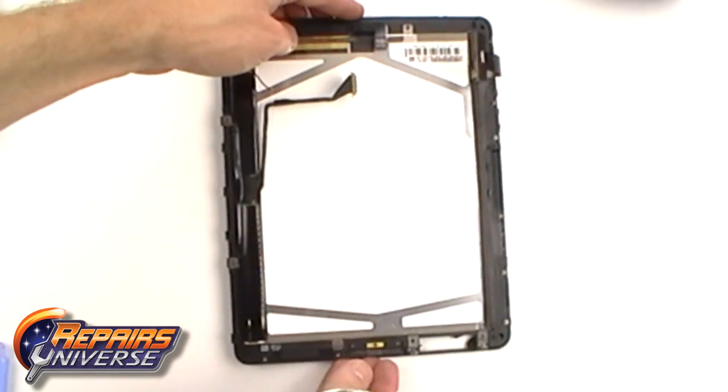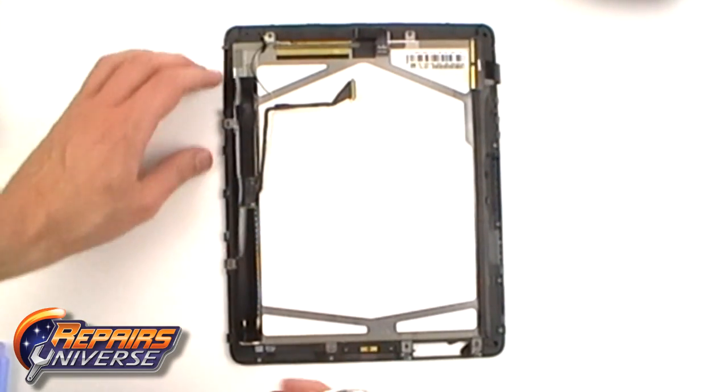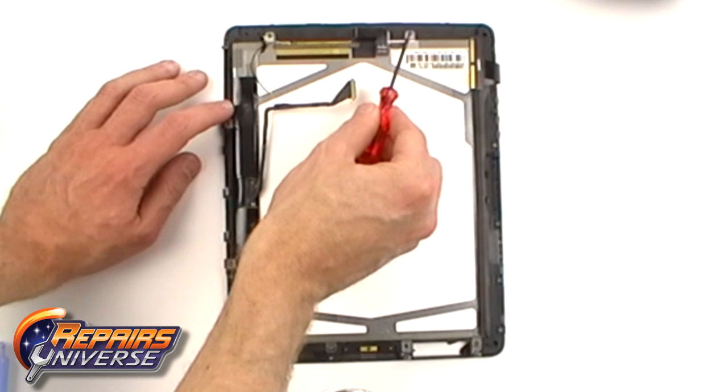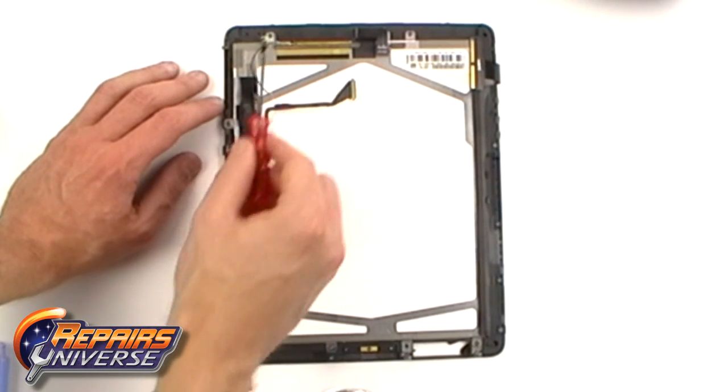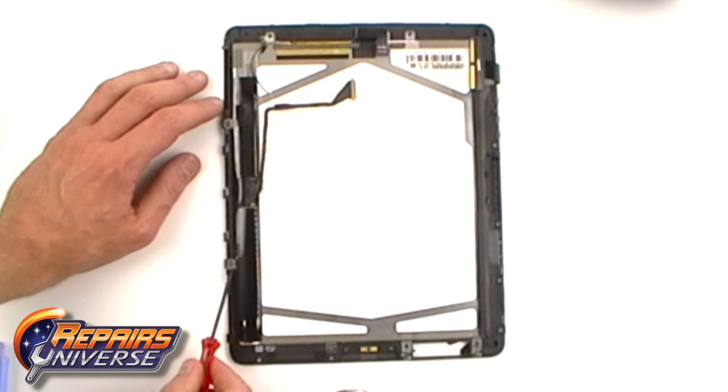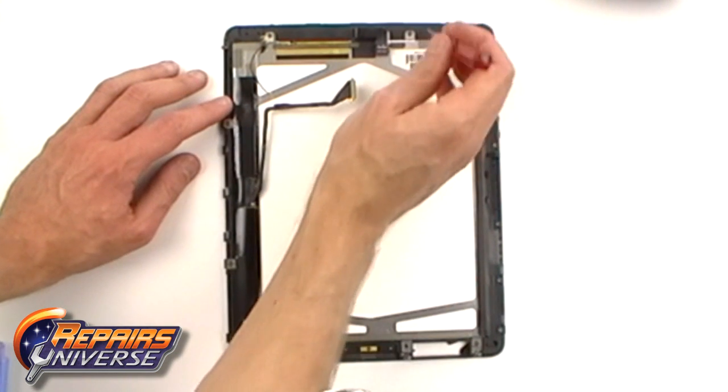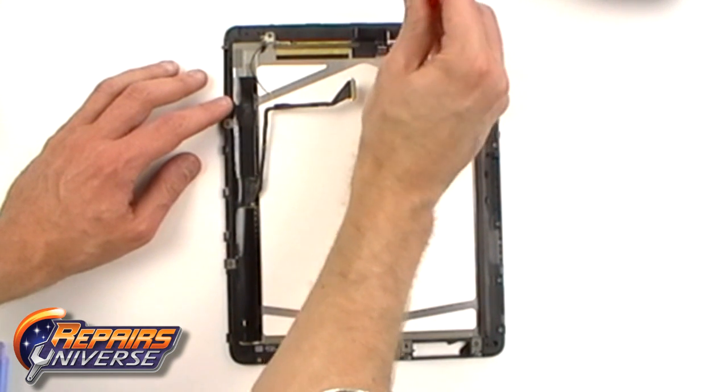With the screen released from the iPad, you now need to remove the LCD screen from the touch screen digitizer. Using a T3 Torx screwdriver available at the RepairsUniverse.com website, remove the screws as being shown here now in the video.